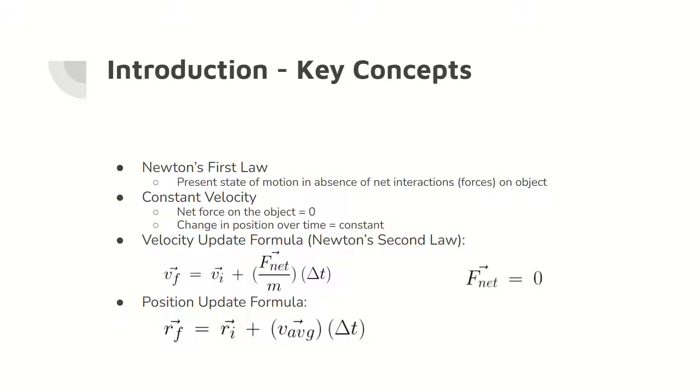As a result, constant velocity is defined as an object that has no net force acting on it and has a constant rate of position change over time. There are two formulas essential to this lab. The velocity update formula, or Newton's second law, describes the change in the velocity of an object when a constant net force acts on the object over a change in time. Because this lab focuses on constant velocity, the net force is expected to be zero.